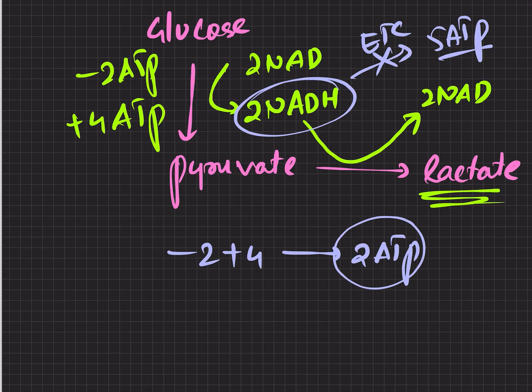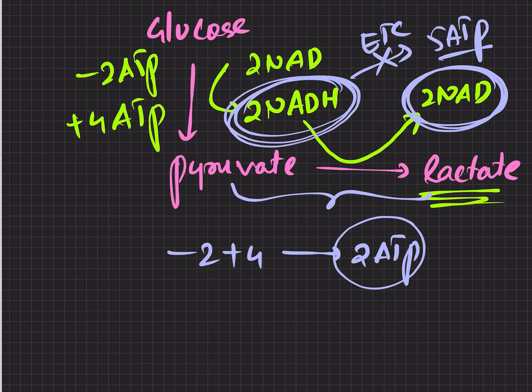Now what is the purpose of this extra step of converting into lactate in anaerobic conditions? It is in order to generate the NAD+. In anaerobic conditions this cannot go into ETC, that's why it's converted into NAD+.